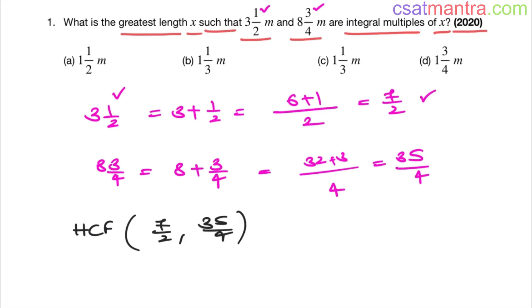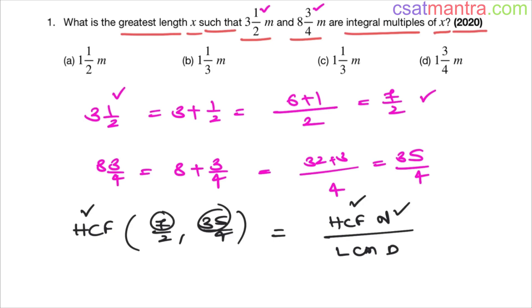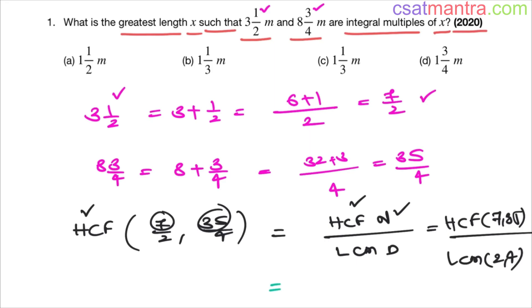We have the formula from that lecture: HCF of fractions = HCF of numerators divided by LCM of denominators. So HCF of 7 and 35 is 7, and LCM of 2 and 4 is 4. Therefore the answer is 7/4, which equals 1 and 3/4. So the answer is option D.